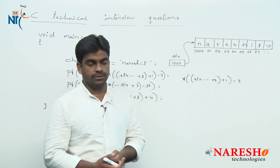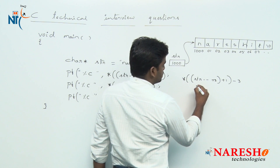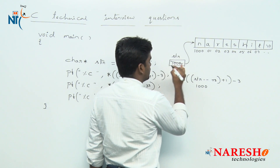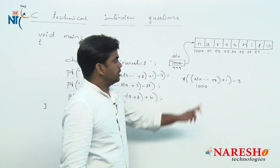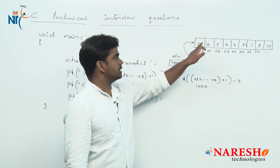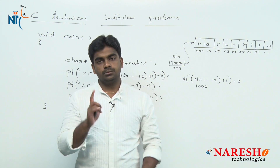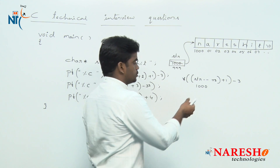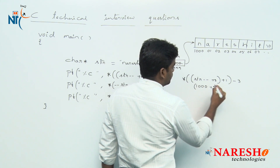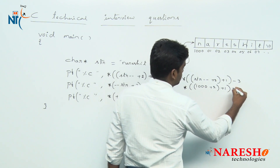It is a post-decrement, so it will substitute the value 1000, but the value is decreased by 1 to 999. Since it is a character pointer, the size is 1 byte, so by pointer arithmetic it decreases by only 1. So we have 1000 plus 2 plus 1, with pointer minus 3.